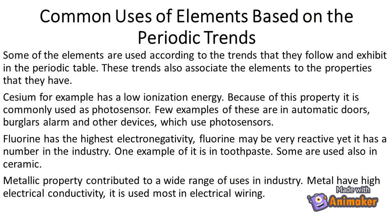Here are common uses of elements based on the periodic trends. Some elements are used according to the trends they follow and exhibit in the periodic table. These trends also associate elements with the properties they have. Cesium, for example, has a low ionization energy. Because of this property, it is commonly used as a photosensor — for example, in automatic doors, burglar alarms, and other devices which use photosensors.